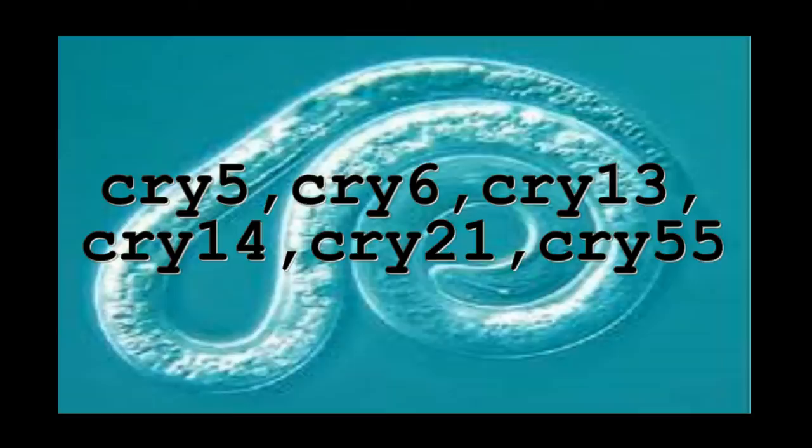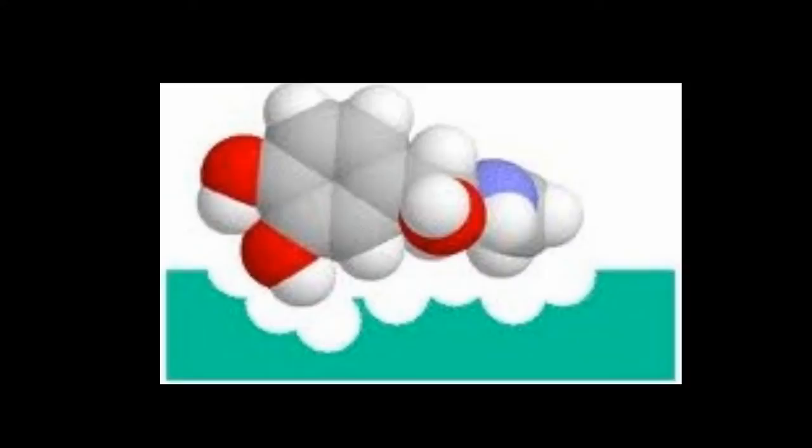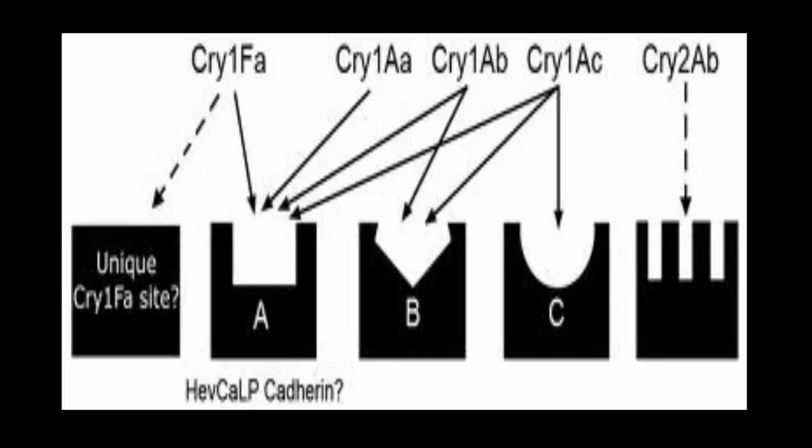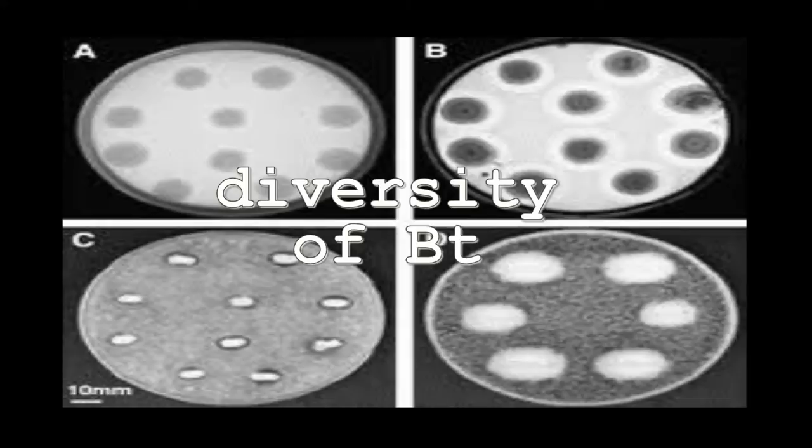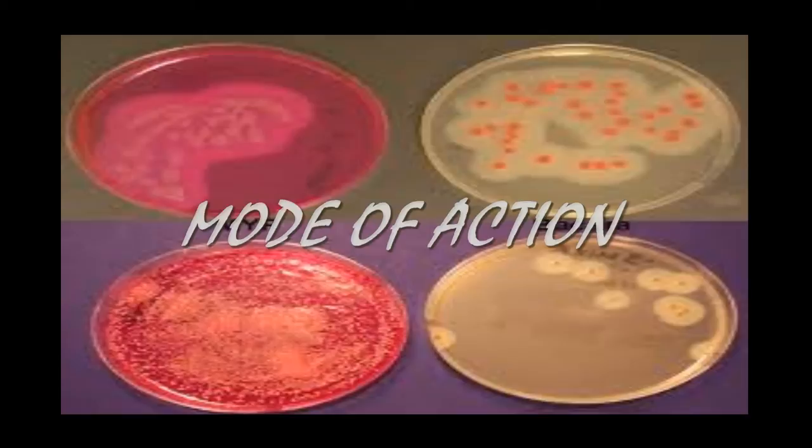The crystal endotoxins are very specific to their hosts. They show their toxic activity only in the presence of the appropriate receptor, and they are innocuous to other organisms including humans. In order to appreciate the diversity among Bt, it is indispensable to understand the mode of action of the endotoxin.